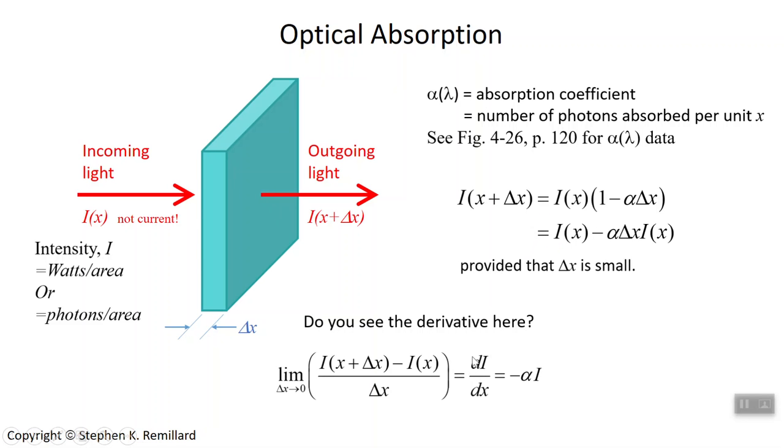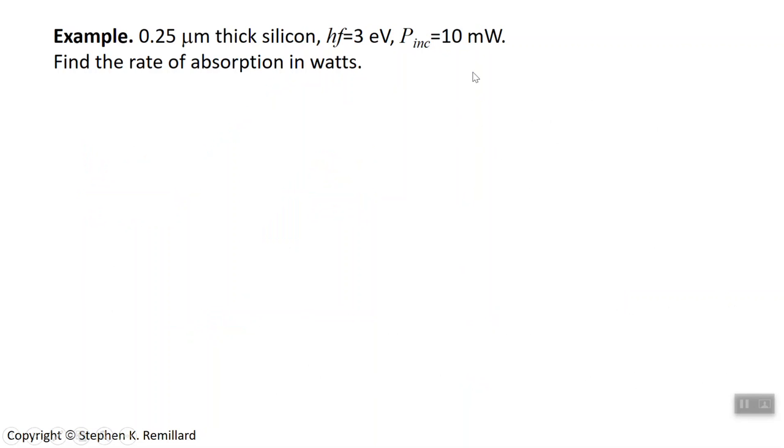So we have a nice little equation here: dI by dx is minus the absorption coefficient times the intensity. That's a simple thing to solve. You just write down the exponential solution to that with some amplitude I sub zero. We have something that we can work with to calculate things as long as we have numbers for the absorption coefficient.